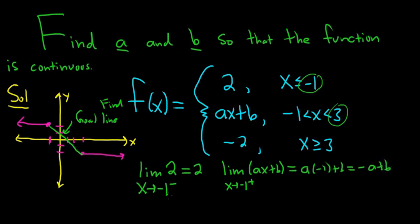So we want the limit from the left to be equal to the limit from the right because we want the limit to exist. Therefore, that tells us that negative a plus b is equal to 2. So that's our first equation.